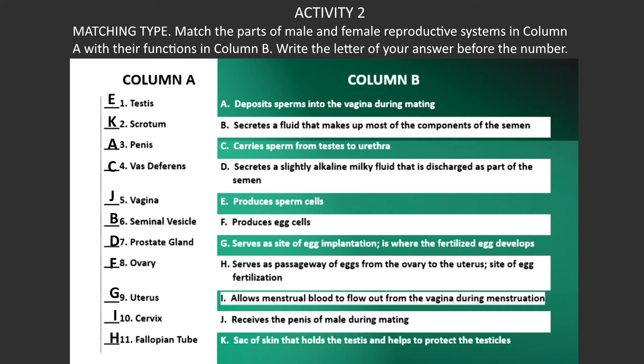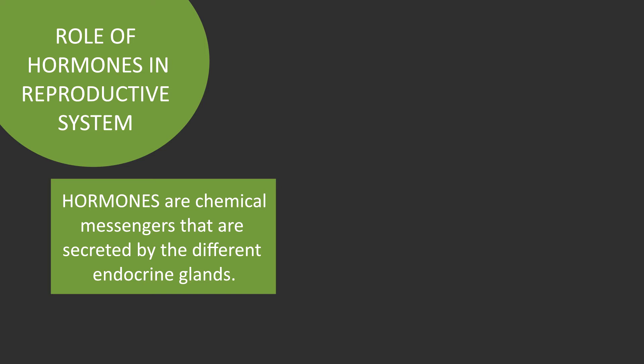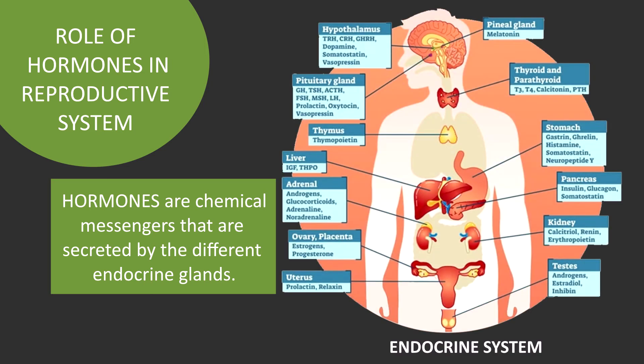Now, what is the role of hormones in the reproductive system? Before we discuss their role, let us first define what hormones are. Hormones are chemical messengers that are secreted by the different endocrine glands. These hormones are fed into the bloodstream, which carries them to organs and tissues of the body to exert their functions. Hormones play an important role in both the female and male reproductive systems.